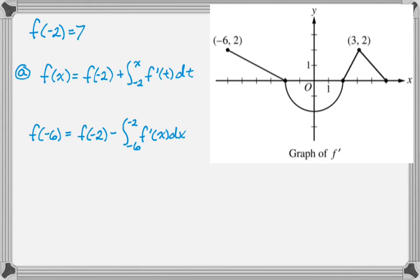You switch the bounds and change the sign, and now we just need to do a little geometry to figure out that triangle there. So that triangle has a base of 4 and a height of 2, so one half times 4 times 2 is 4. This gives us 7 minus 4, which is 3. So f of negative 6 is 3.